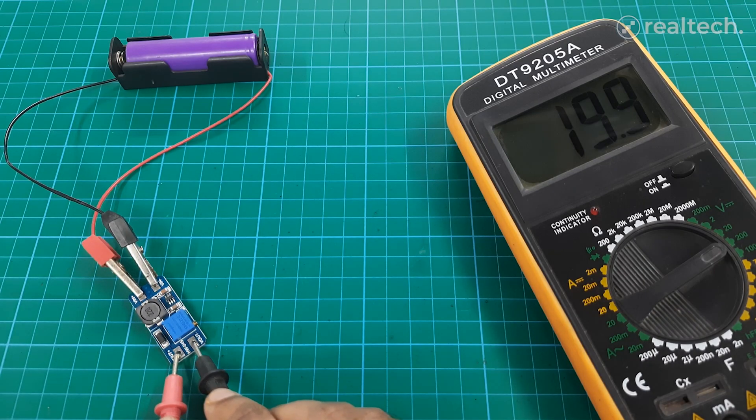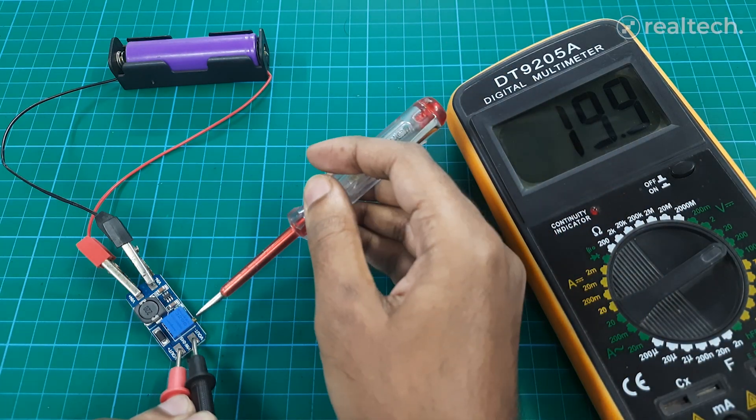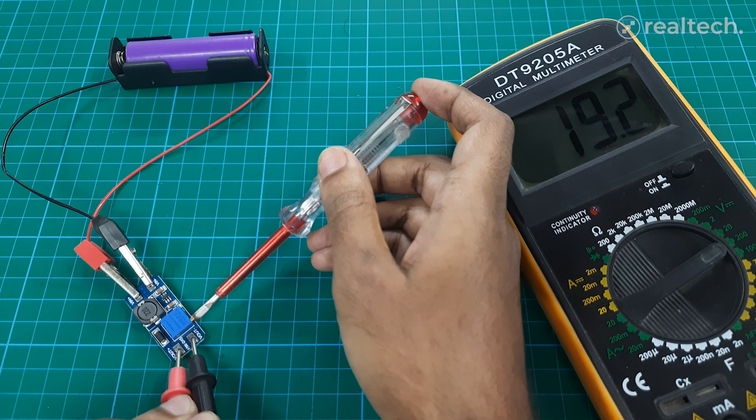Capacitors smooth the voltage, and a control circuit adjusts the switching to maintain a stable output. This process repeats rapidly for efficient voltage boosting.